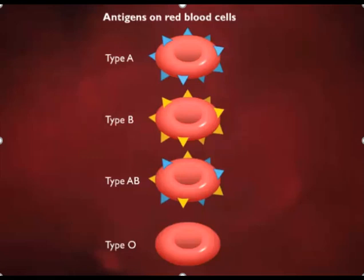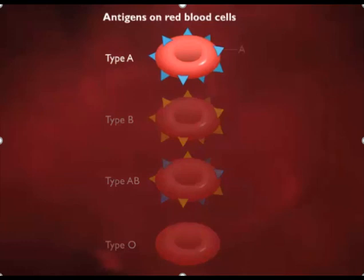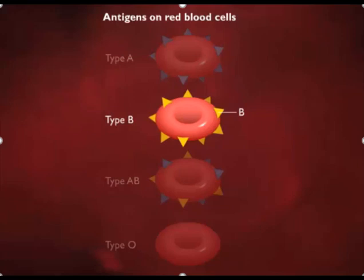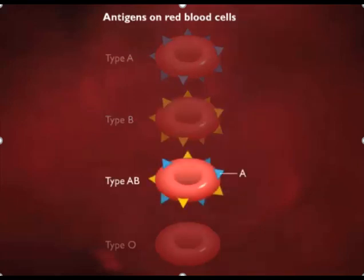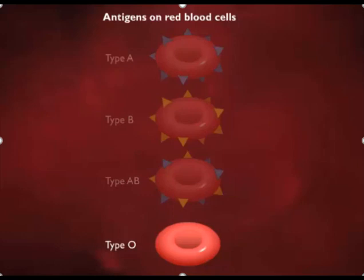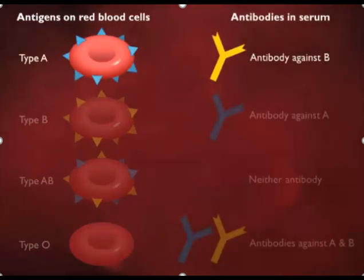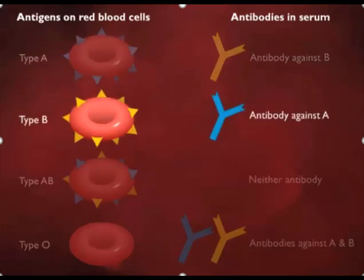Type 2 hypersensitivities involve interactions of antibodies and surface antigens of cells, followed by complement-assisted lysis of those cells. A typical example is mismatched blood transfusions. There are four blood groups based on antigens on red blood cell surfaces. Type A has A antigens, Type B has B antigens, Type AB has both A and B antigens, and Type O has neither. The serum of Type A blood contains antibodies against Type B antigens.